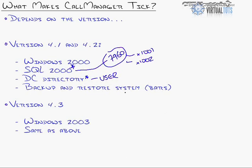That is what stores all of your user accounts if your Call Manager database is separate from your network database. There are tools that you can use to integrate, to tie Cisco Call Manager to Microsoft Active Directory, and all of the user accounts and passwords that you have in Active Directory can be used by Cisco Call Manager. Otherwise, you have to have separate user accounts — somebody's username and password to manage their phone is different from their Windows login. You can tie those directories together. If you are using Call Manager on its own, meaning you're not integrating into Active Directory, DC Directory is what stores your users.